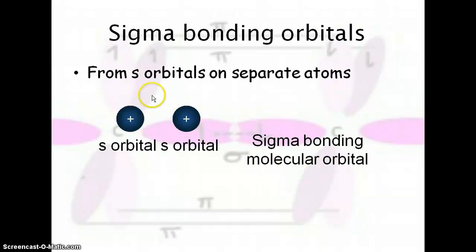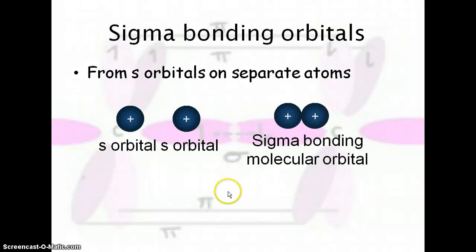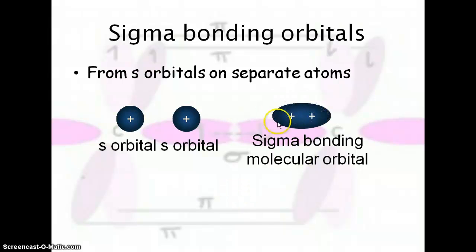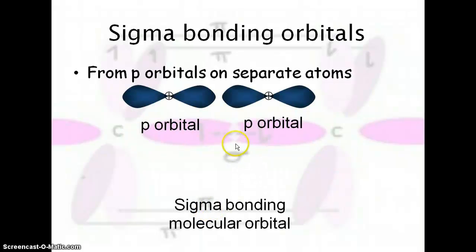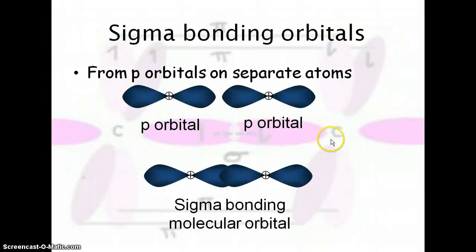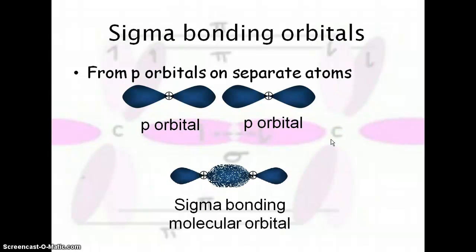Here you see some sigma bonding orbitals that are S orbitals. We have an S orbital on separate atoms, and when they approach one another, they actually hybridize and form a new orbital — this is the sigma bonding molecular orbital. P orbitals can also sigma bond if they are side by side. Two p orbitals from separate atoms come together and hybridize to form a sigma bonding molecular orbital.